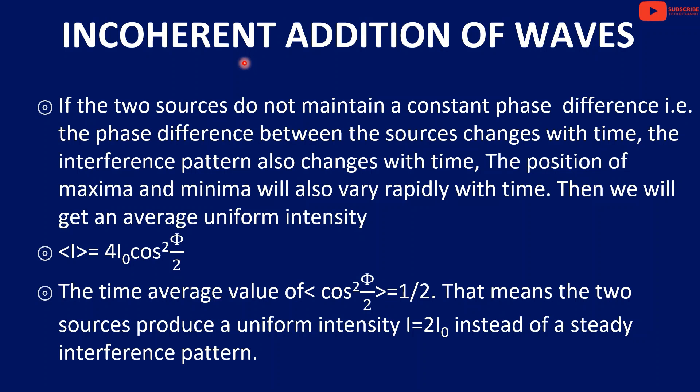Now let's discuss the incoherent addition of waves. With two incoherent sources, we do not find a stable interference pattern, because the position of maximum and minimum keeps changing with time. We find an average uniform intensity. Since I = 4I₀ cos²(φ/2) and the time average value of cos²(φ/2) is 1/2, we get I = 4I₀ × 1/2 = 2I₀. So incoherent sources give a uniform intensity of 2I₀.